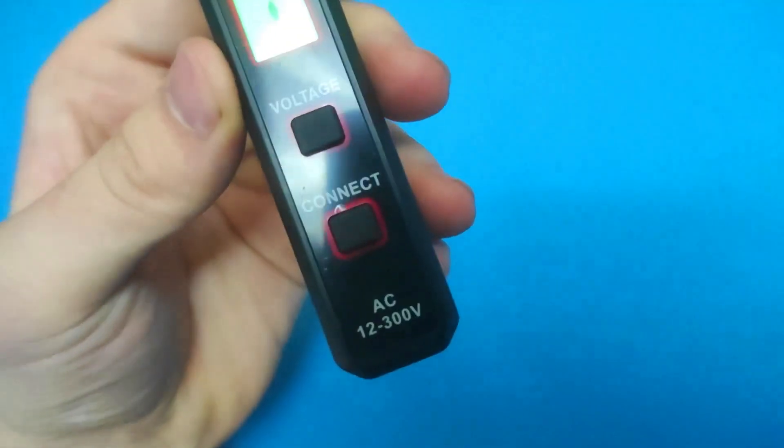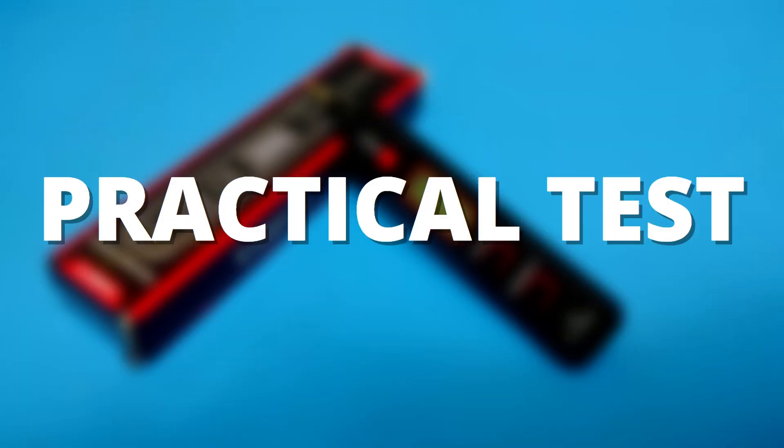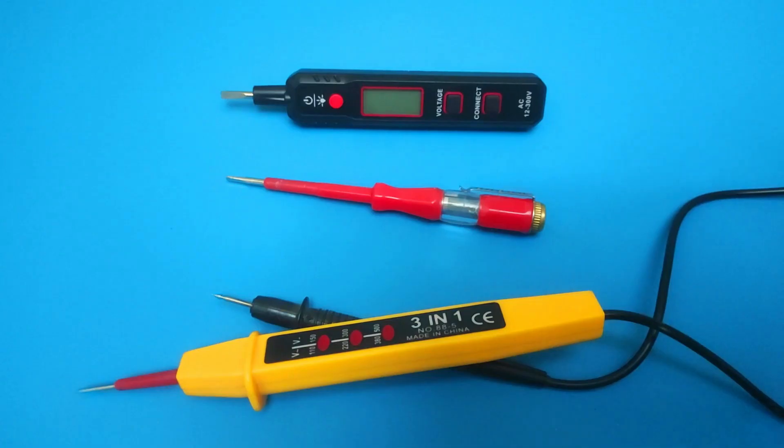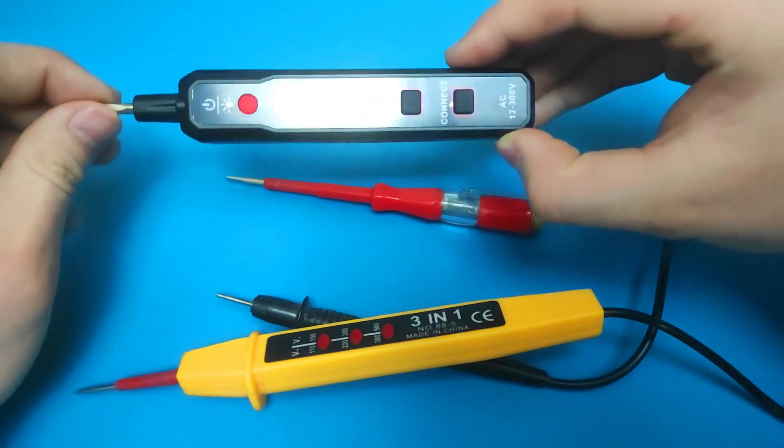As you can see this tester can measure from 12 to 300 volts AC. We will compare the KWITS voltage tester with these two other types of testers.